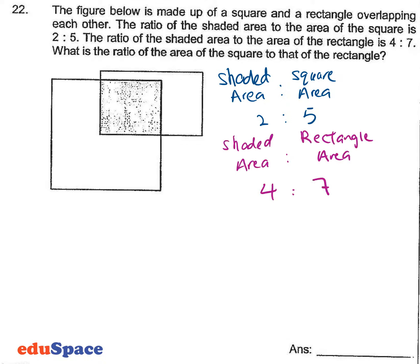What is the ratio of the area of the square to that of the rectangle? We need to make the shaded area values equal. We multiply by 2, which gives us a shaded area ratio of 4 to 10.